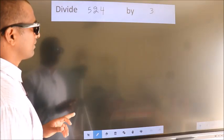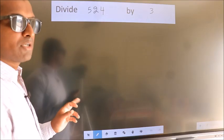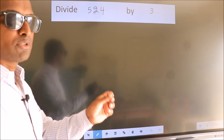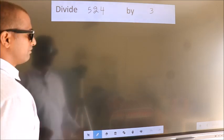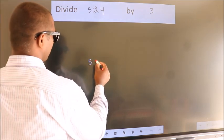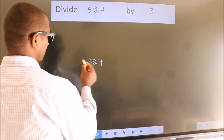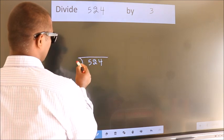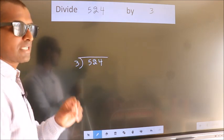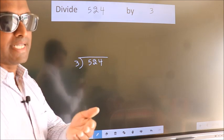Divide 524 by 3. To do this division, we should frame it in this way. 524 here, 3 here. This is your step 1.